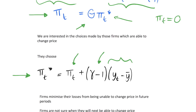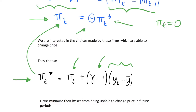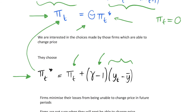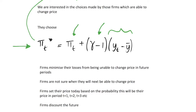The optimal pi t star equals this expression, and we can link it to the actual inflation rate, which is just the fraction theta of this optimal inflation rate. Now we consider the firms that are changing their price and make some assumptions about them. These assumptions seem fairly reasonable. It's not particularly realistic that only certain firms can change their price each period — I'll discuss that at the end — but we are going to have firms minimising some loss function from being unable to change their price in future periods.